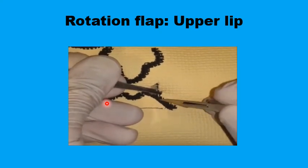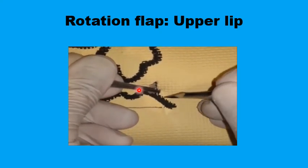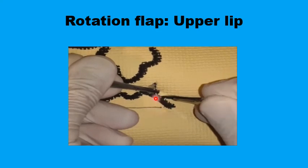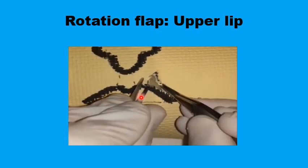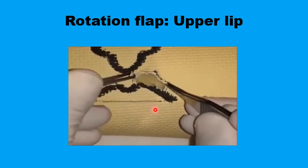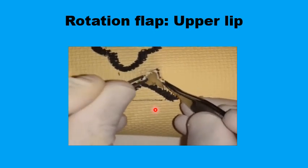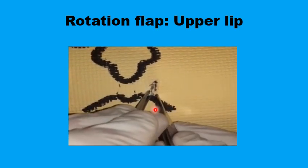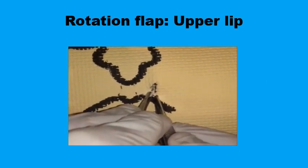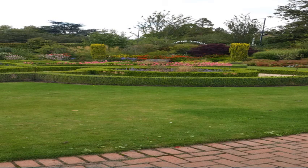When flaps are taken from opposite directions near the lip, it is important to keep the lip line with minimal distortion — which is why the A-to-T type of reconstruction is preferred in that area. This concludes the presentation on rotation flaps — covering the dimensions, technique, and applications. Assalamualaikum.